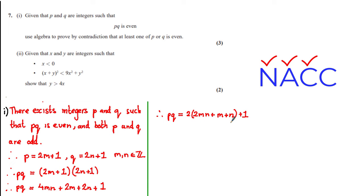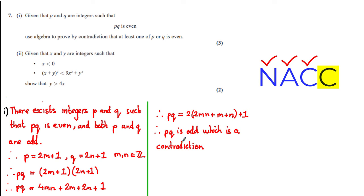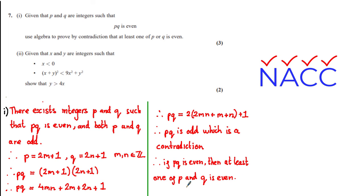This algebraic manipulation is intentional — we're testing whether pq is odd or even given that p and q are odd. Looking at the expression, we have 2 multiplied by an integer sum, which is even, and adding 1 makes it odd. Therefore pq is odd, which is a contradiction because we assumed that when both p and q are odd, their product pq is even. Since we have a contradiction, the initial statement must be true. We conclude: if pq is even, then at least one of p and q is even.